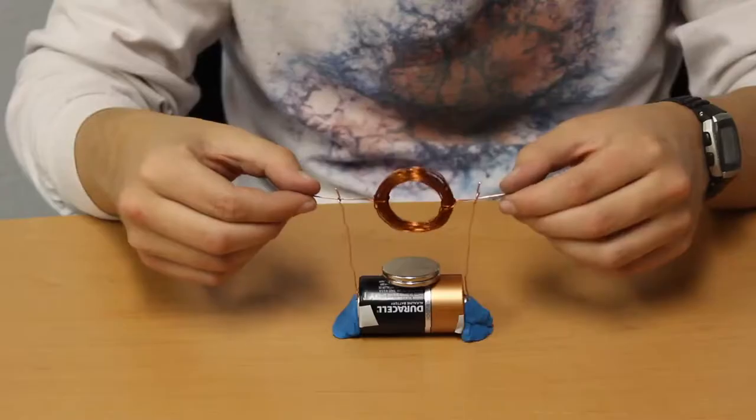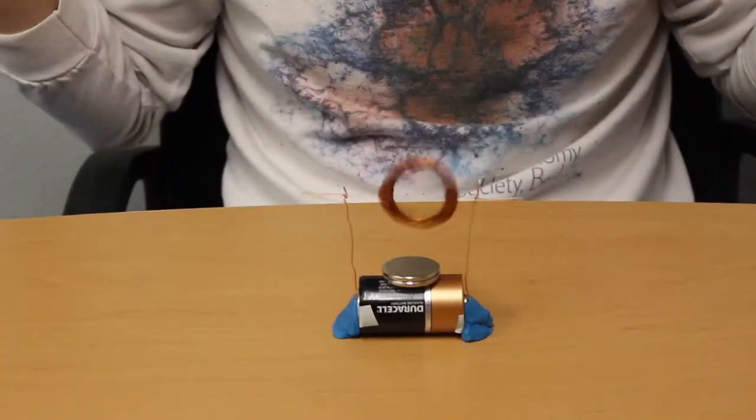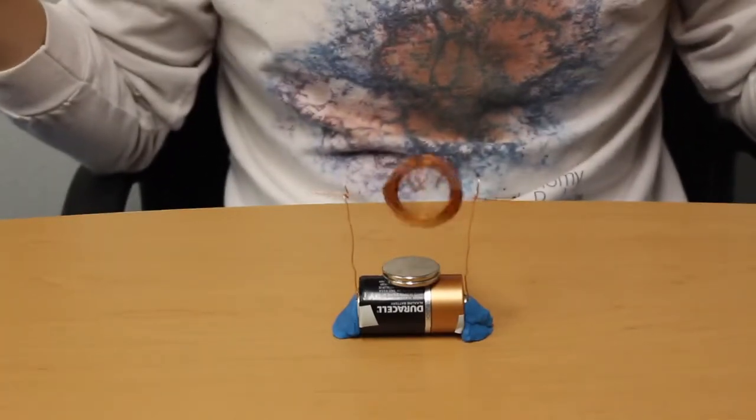Motors can seem pretty complicated, but I can show you how to make an at-home DIY electric motor. All you need is copper wire, a battery, magnet, two posts of wire, and electrical tape.